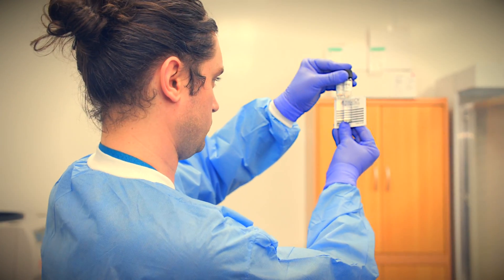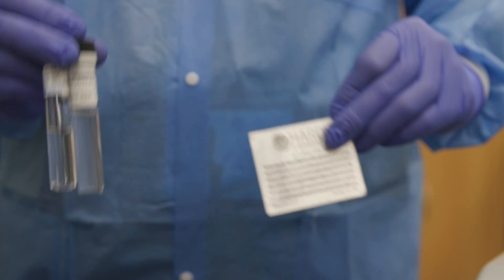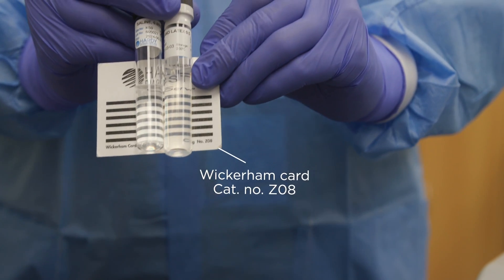Using a bright light, compare the 0.5 McFarland standard against the bacterial suspension using a white card with contrasting black lines. This card is called a wickerham card.